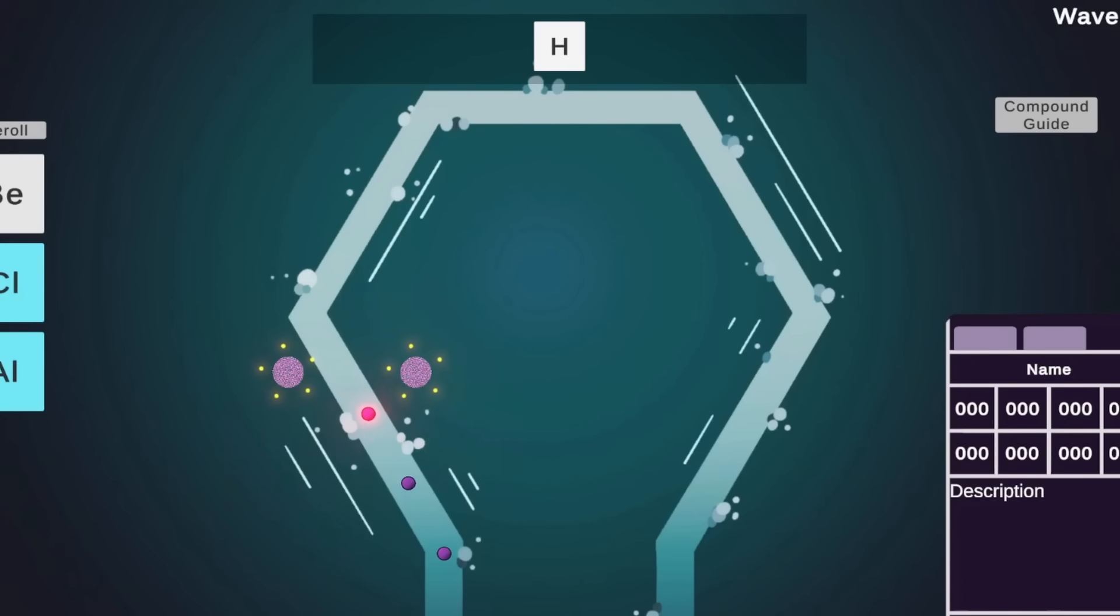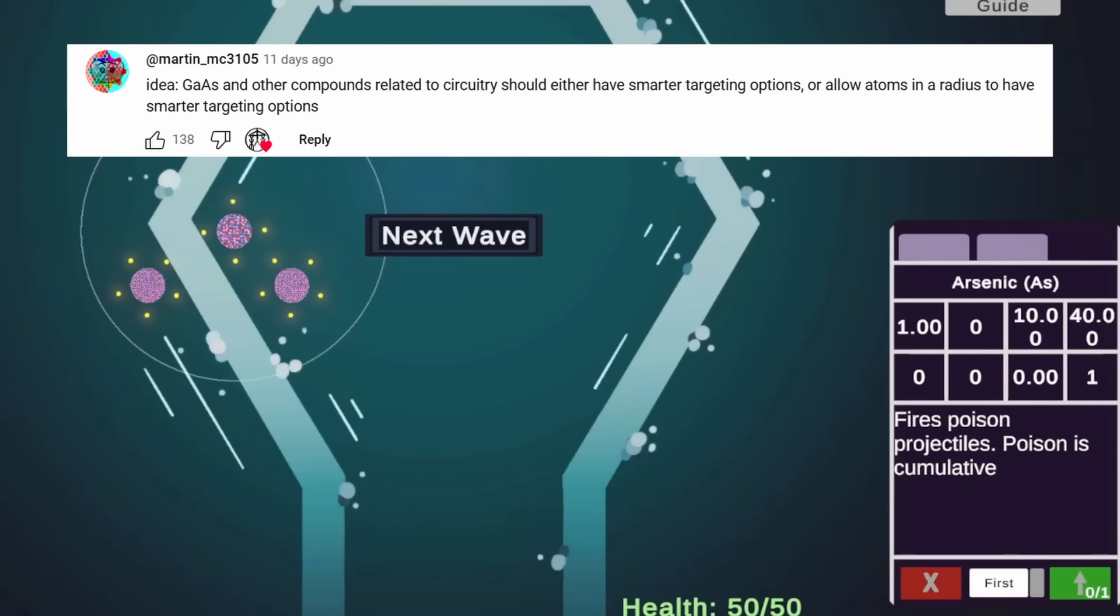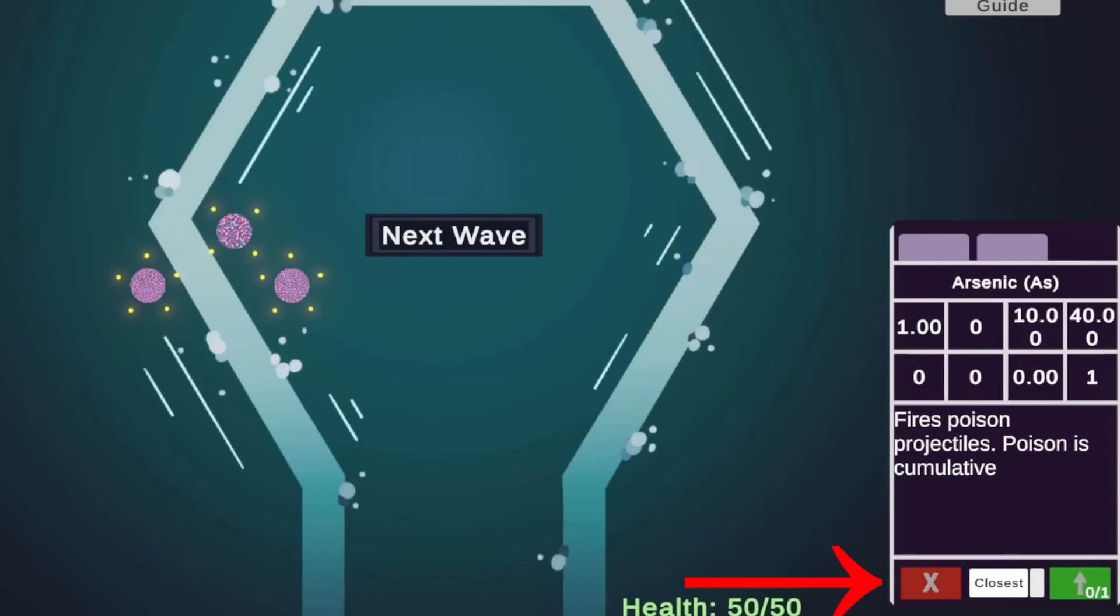From here, I added a couple less mechanics such as poison damage for toxic atoms and compounds like arsenic. These atoms don't do any immediate damage, but they apply a stacking damage over time effect on enemies they hit. Lastly, I gave silicon the ability to unlock targeting options for surrounding atoms, and here you can see there are a few different target priorities you can choose between.